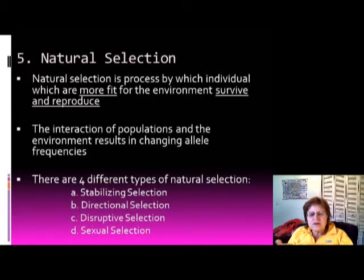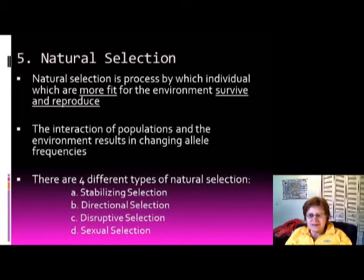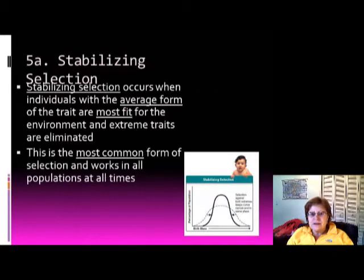There are four types of natural selection: stabilizing, directional, disruptive, and sexual selection. The first is stabilizing selection.